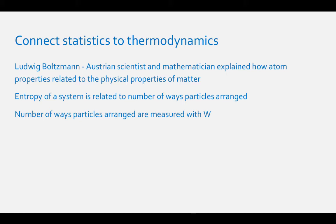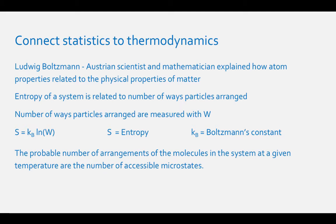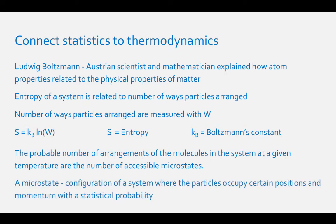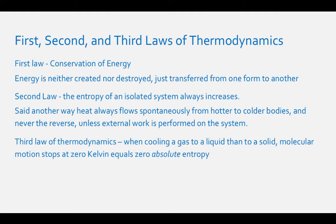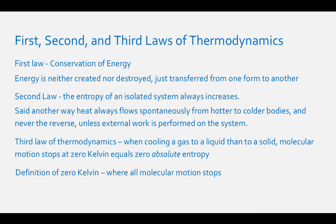Boltzmann linked the number of probable arrangements to entropy with this equation: entropy equals a constant — called the Boltzmann constant — times the natural log of W. The probable number of arrangements of the molecules at a given temperature are the number of accessible microstates. A microstate is a specific configuration of a system where the particles occupy certain positions and momentum with a statistical probability at a certain temperature. Considering a gas with all particles translating, rotating, and vibrating — when you cool this gas down to a liquid, then to a solid, the molecular motion decreases until it reaches zero at zero Kelvin. This is the definition of zero Kelvin, where all molecular motion stops. The third law states that the absolute entropy for a substance at zero Kelvin is zero — this is where there is no more dispersal of energy and motion stops.